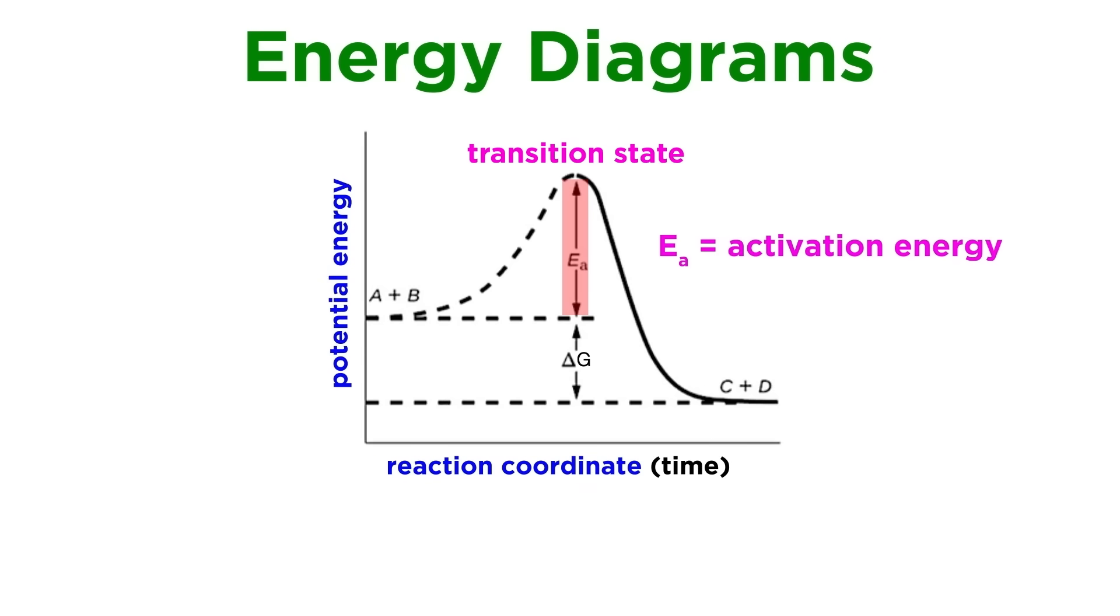The energy difference from reactants to transition state is called the activation energy. This is the energy that must be supplied to reach the transition state, and therefore for the reaction to occur. A large activation barrier does not alter the thermodynamics of the reaction, only the kinetics, by making it slower, as a smaller percentage of collisions will result in a reaction.